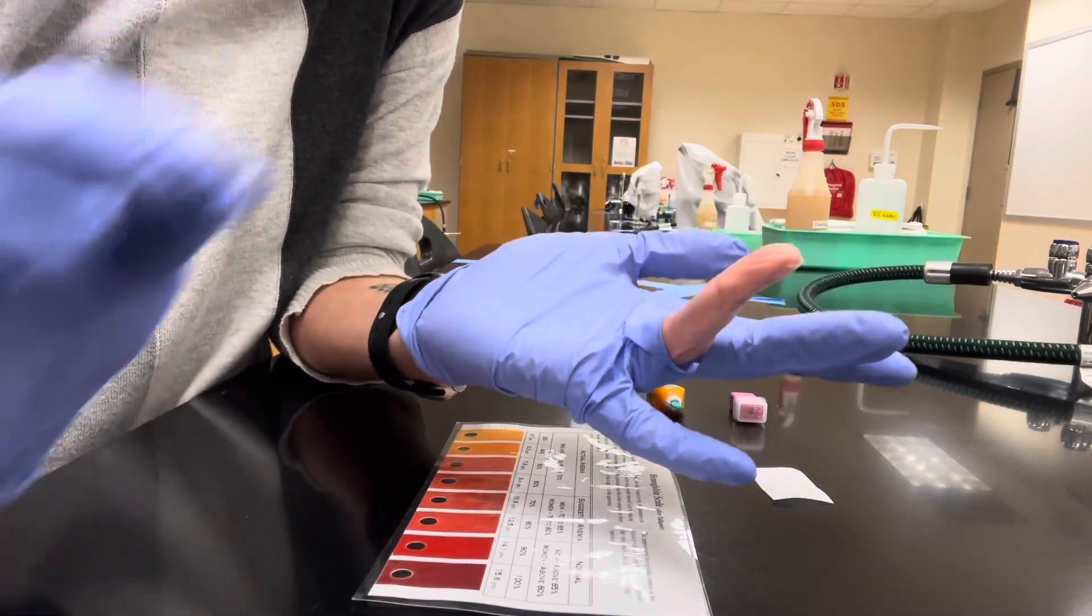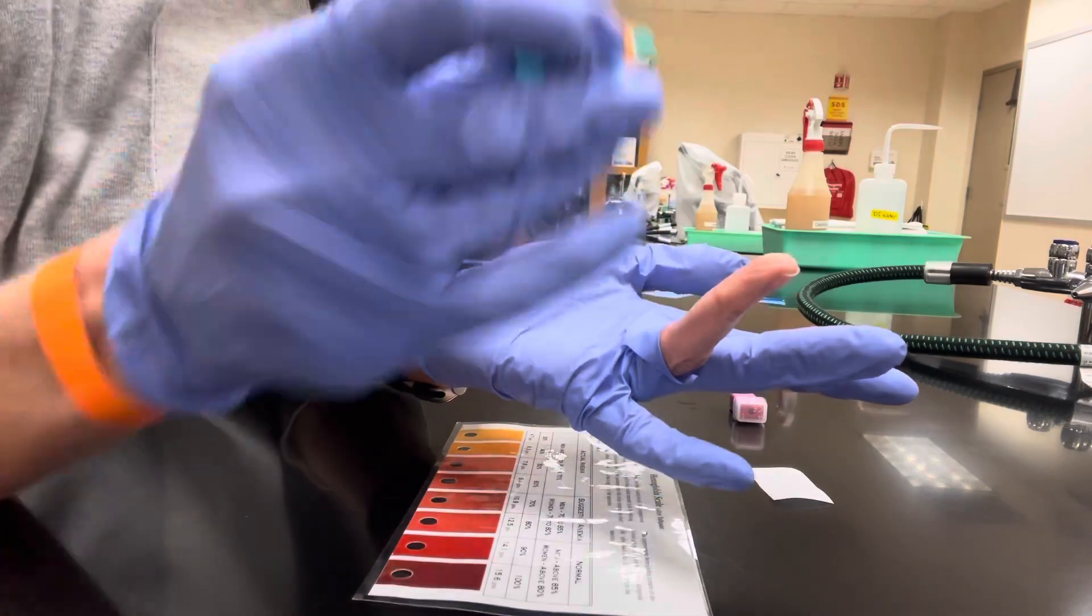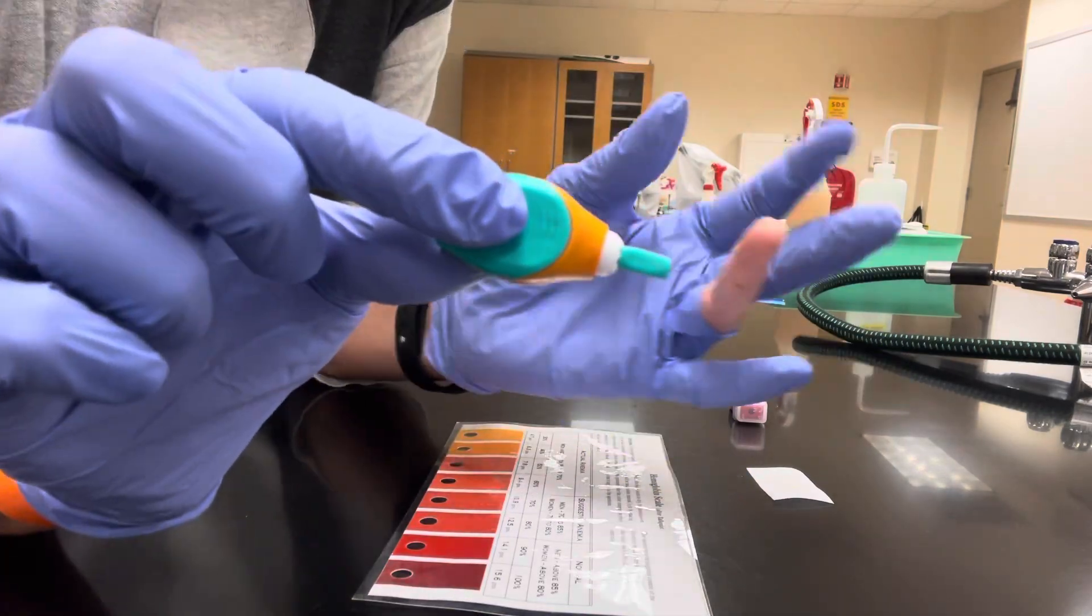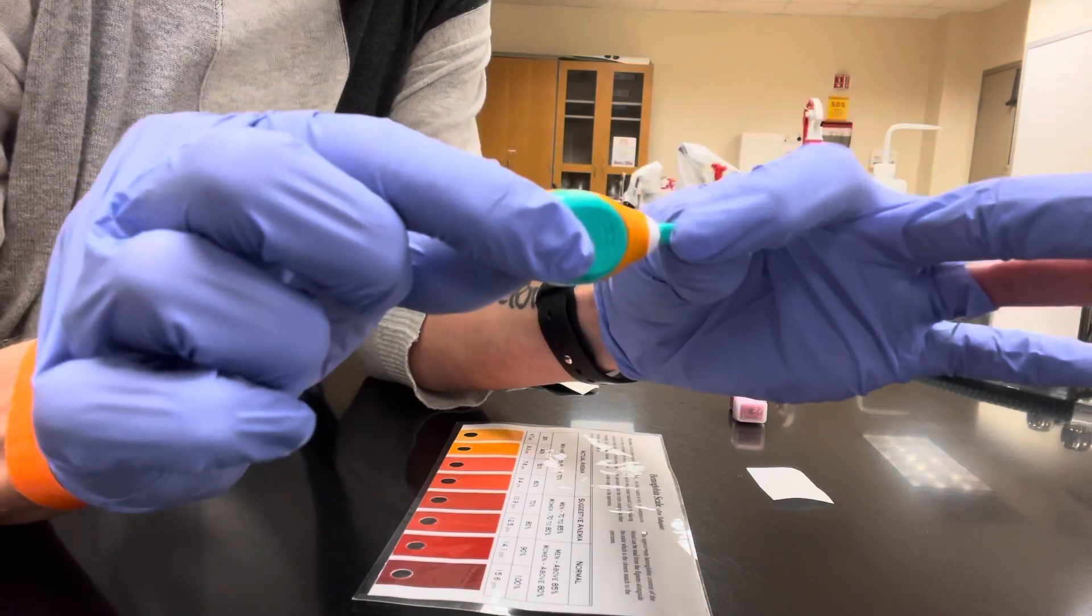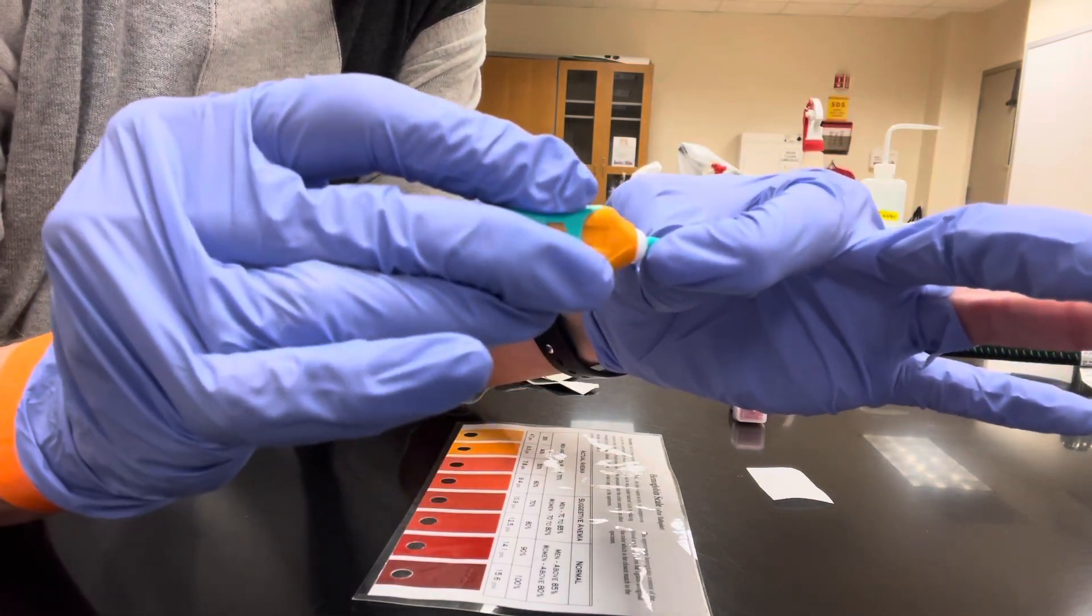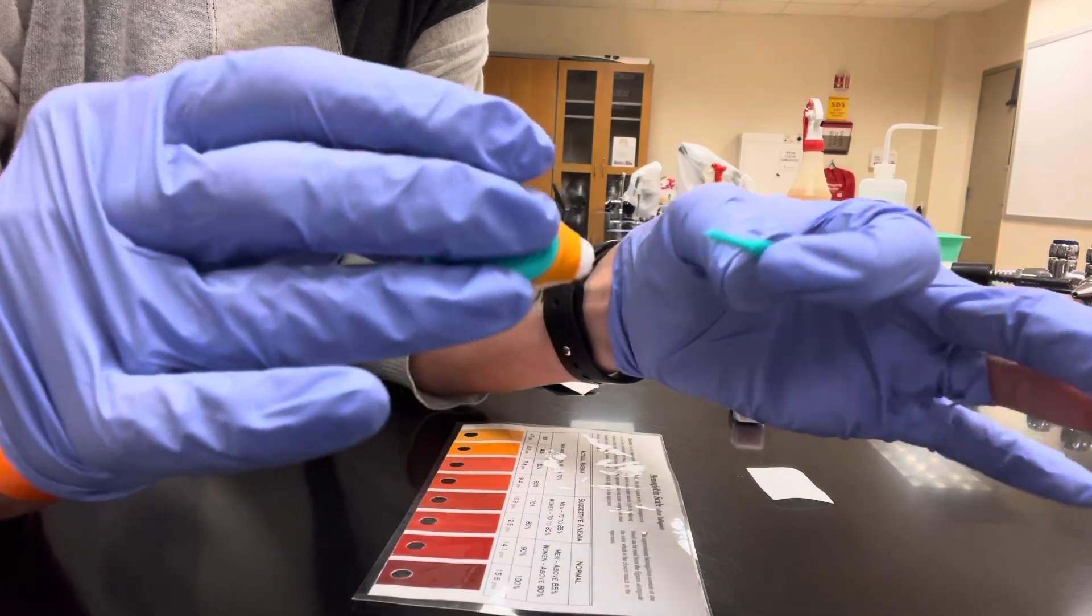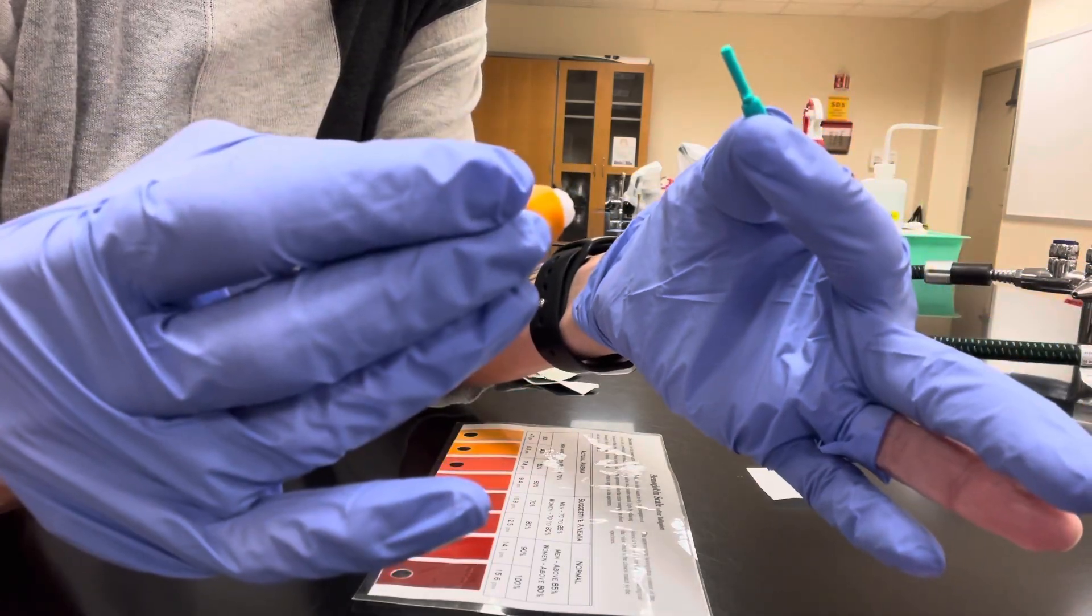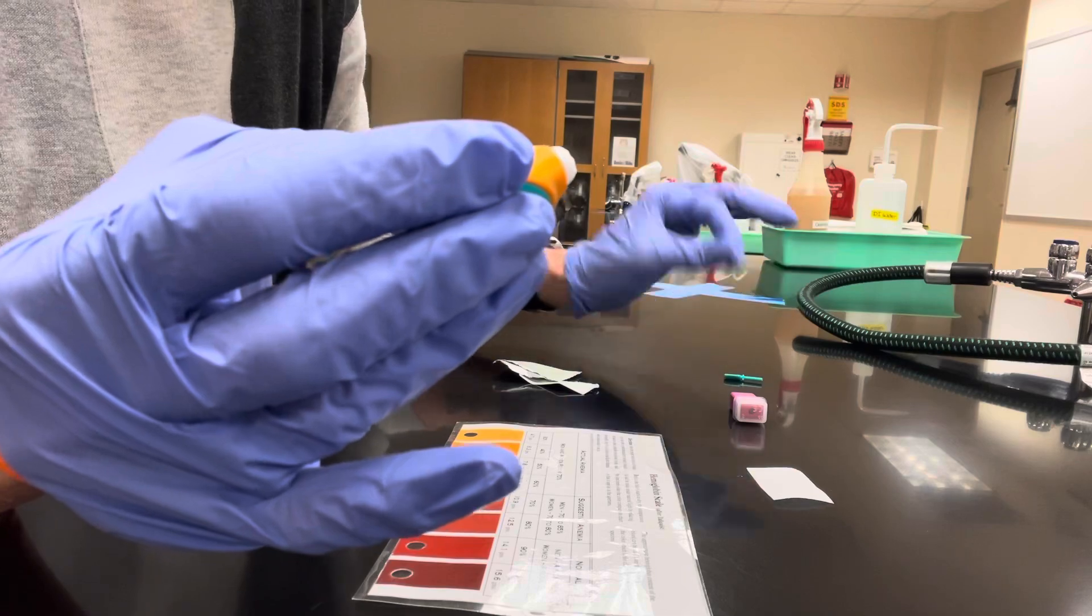Once it's air dry, then you take a lancet. If you're using one of these, you want to take the green cap and just gently twist until the green cap comes out. Place that aside.